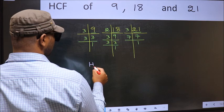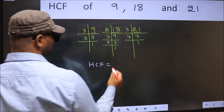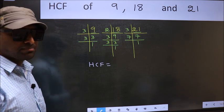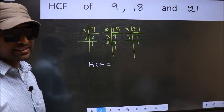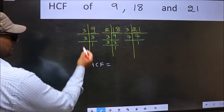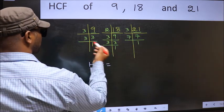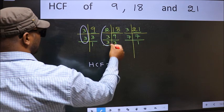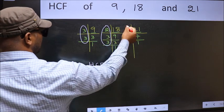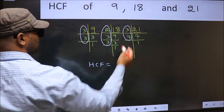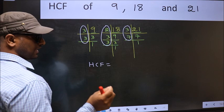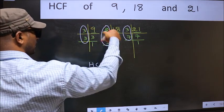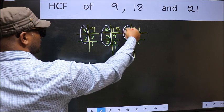Therefore, our HCF is — the HCF is the product of the numbers which should be present in all three places. That is here, and here, and also here. So now let us find the numbers which should be present here, here, and also here.